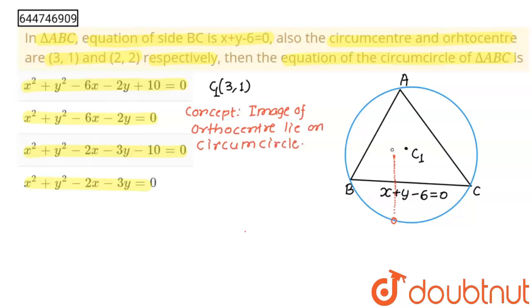So this is our circumcenter (3,1), and I am going to take our orthocenter (2,2) which is given in question. So let its image be x1 comma y1. No problem, so I am going to find its image.